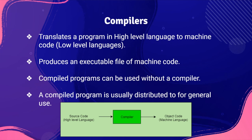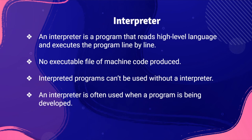The first type of translator is the compiler. Compilers translate a program in high level language to machine code. It produces a file of machine code that is executable. The compiled program can be used without a compiler or interpreter, and is usually distributed for general use.